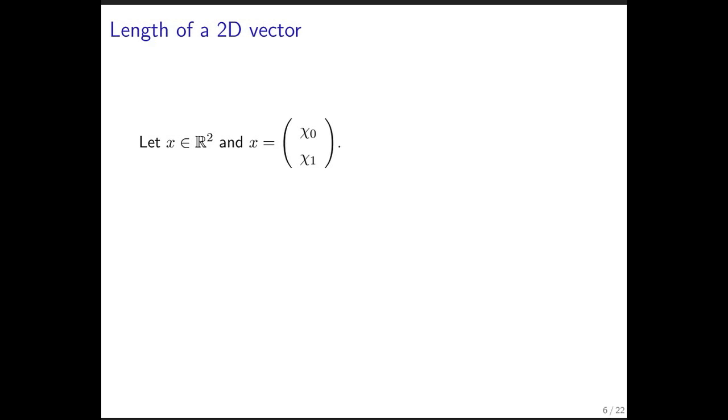In general, if we're given a vector of size 2, its Euclidean length is the square root of the sum of the squares of the components.